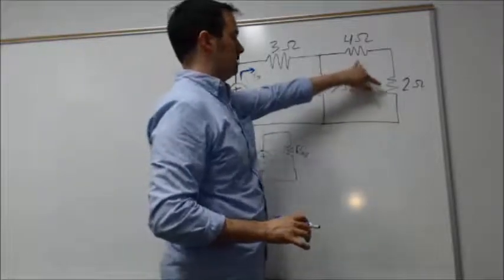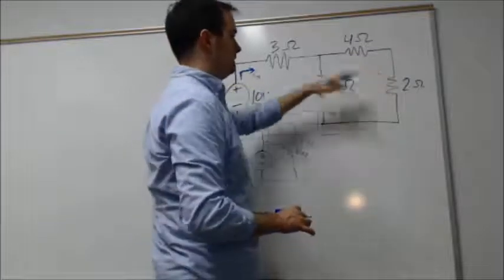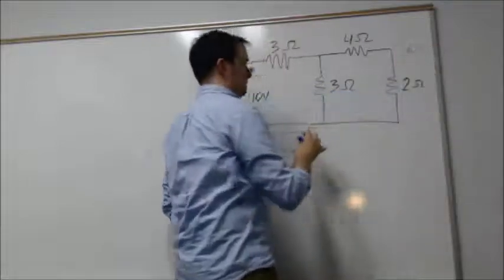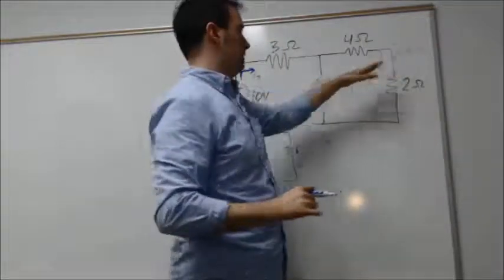These would combine into a 6 ohm resistance. Then we have the 6 ohm in parallel with our 3 ohm resistor.